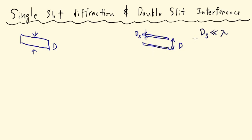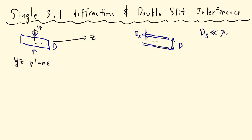So in essence we don't need to worry about d-sub-s in the double slit problem. When we describe the diffraction in the plane, the y-axis is along the vertical axis, the z-axis is the line connecting the center of the slit to the center of the screen, and we're describing diffraction within the y-z plane in both cases.